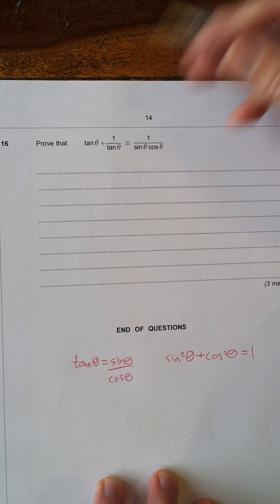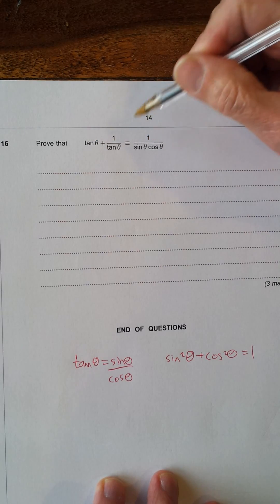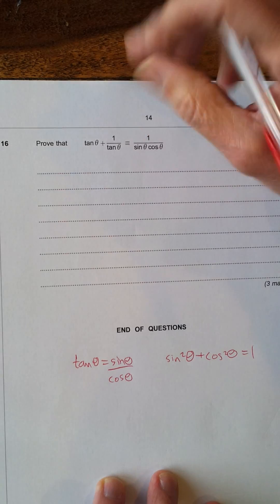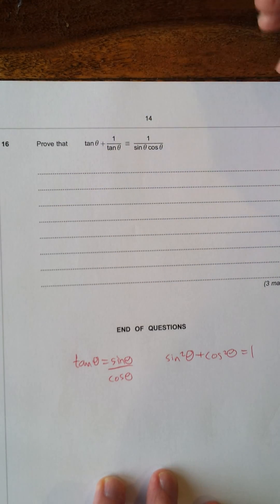Okay, what you can do with these ones, you can either work with the left-hand side and show that it equals the right-hand side, work with the right-hand side and show that it equals the left-hand side, or you can work on both and just make them balance. I'm just going to look at the left-hand side and try and make it equal the right-hand side.